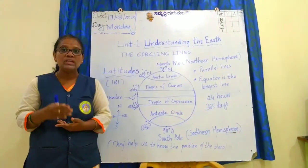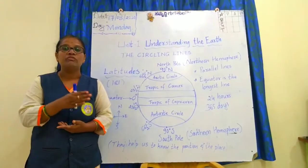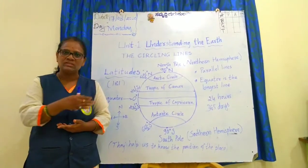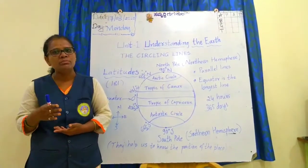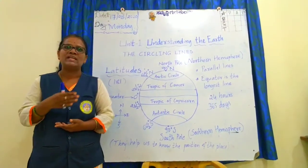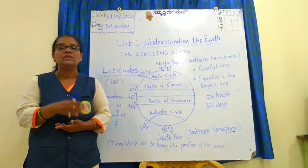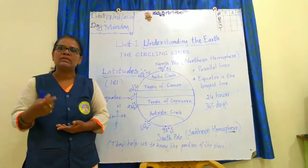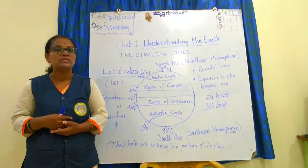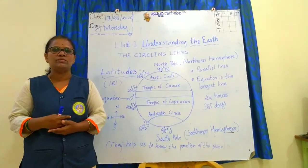Earth is the only astronomical object where life exists. Three parts of the earth are covered with water and one part is covered with land, so it is also called the blue planet. Earth is our home planet. This is a brief introduction of earth.